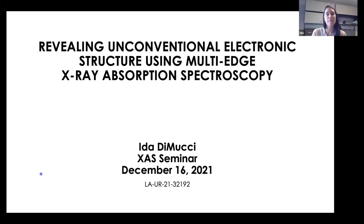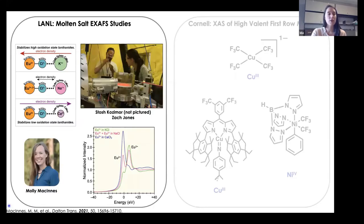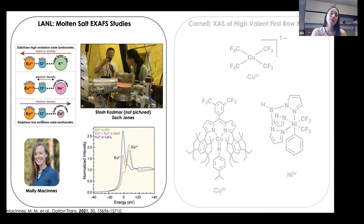Today I'm going to talk about revealing unconventional electronic structure using multi-edge x-ray absorption spectroscopy. I'm currently at Los Alamos National Lab, where we're working towards the ability to perform in-situ molten salt XAS measurements on lanthanides and actinides. This work has really been pioneered by Molly McInnes, and what we're looking at is the interaction of these lanthanide and actinide chlorides with outer sphere cations and how that can affect their oxidation state or their ability to do electron transfer.